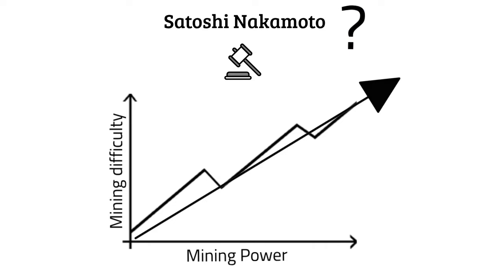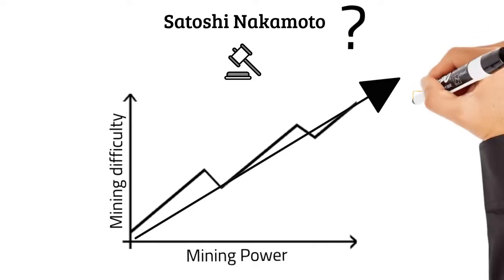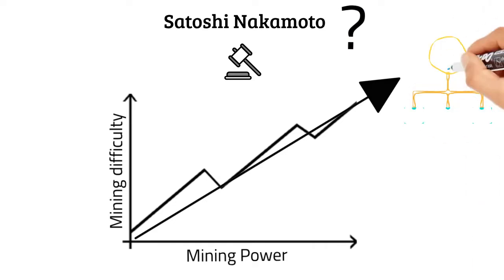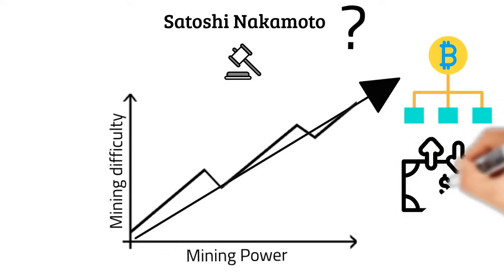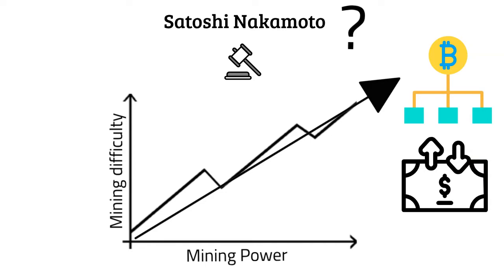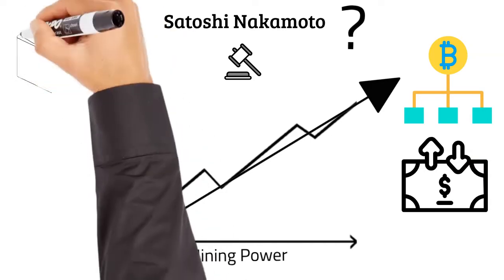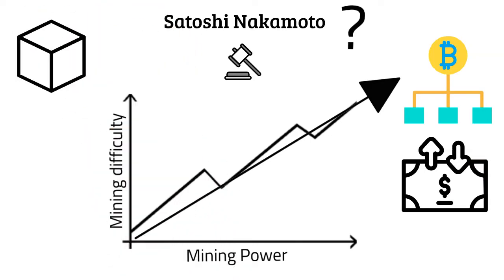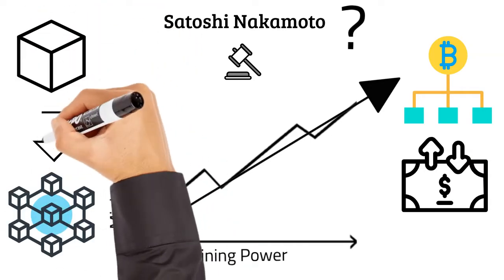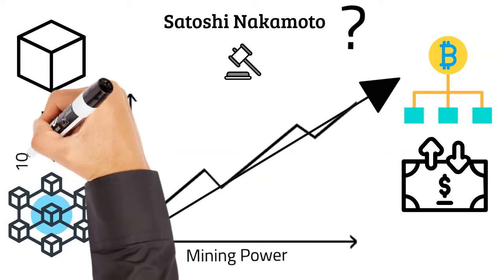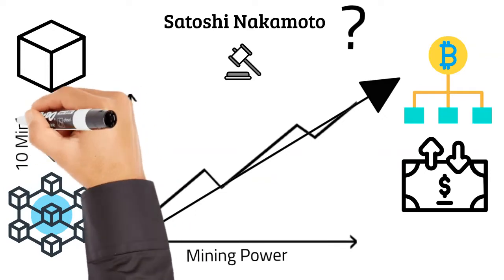So why on earth did Satoshi do this? Well, he wanted to create a steady flow of new bitcoin into the system. In essence, this was done to keep inflation in check. The mining difficulty is set so that on average a new block will be added every 10 minutes.